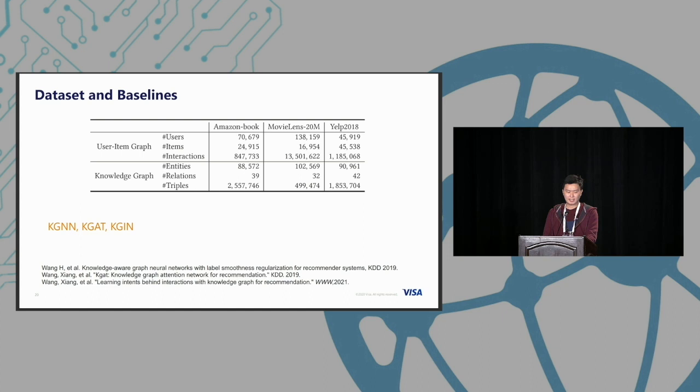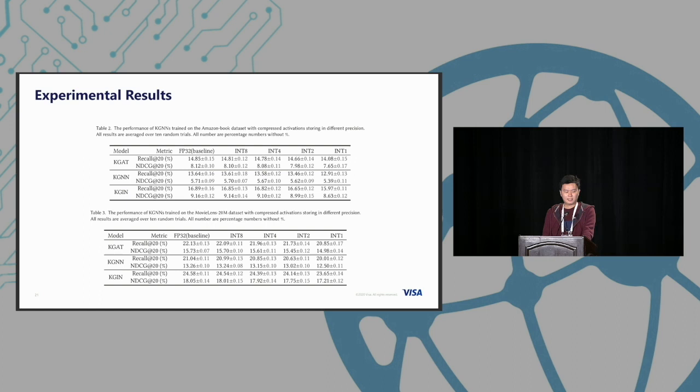Here's our result. In the first column, fp32 is the original floating point implementation supported by PyTorch. The last four columns are our improvements. We're trying to quantize to int8, int4, int2, and int1. As we can see, there's no massive accuracy loss. If we look at int2 and floating point 32, they almost have very similar performance for different tests.